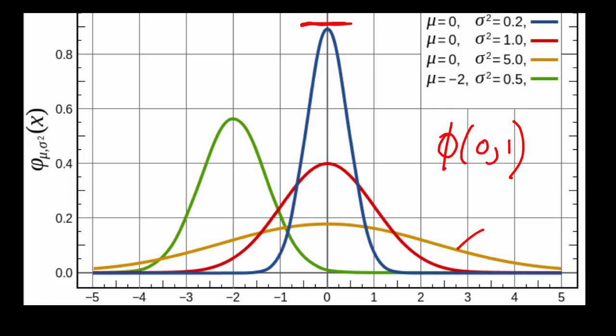We can represent any Gaussian using this basic mean and variance notation. For example, this green Gaussian would have the following notation: Phi, mean of minus 2, variance of 0.5.